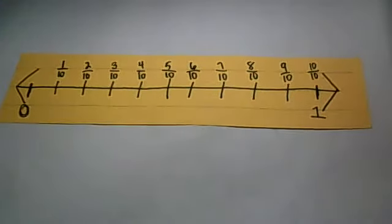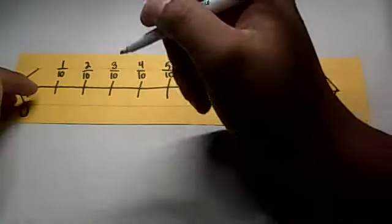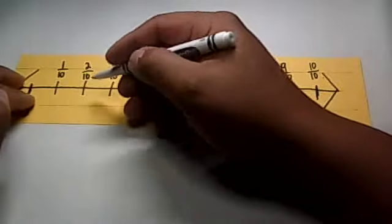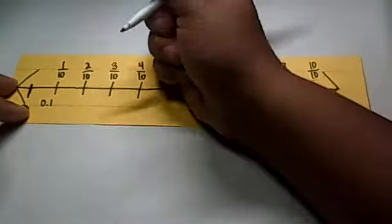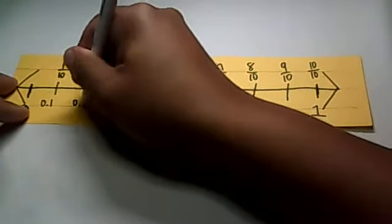Now how do we write the one tenth as a decimal? Well we write it as zero and one tenth. Then we go to zero and two tenths for the second one, zero and three tenths.